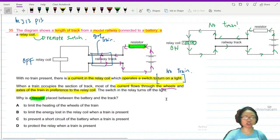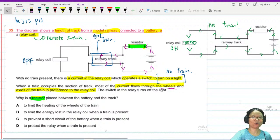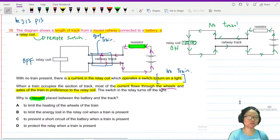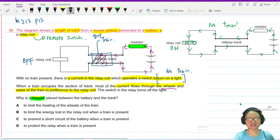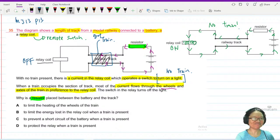To limit the energy loss in the relay coil when the train is present. Option B is wrong because when the train is present, there is no current in the relay coil. When there's no current in the relay coil, so B is wrong.